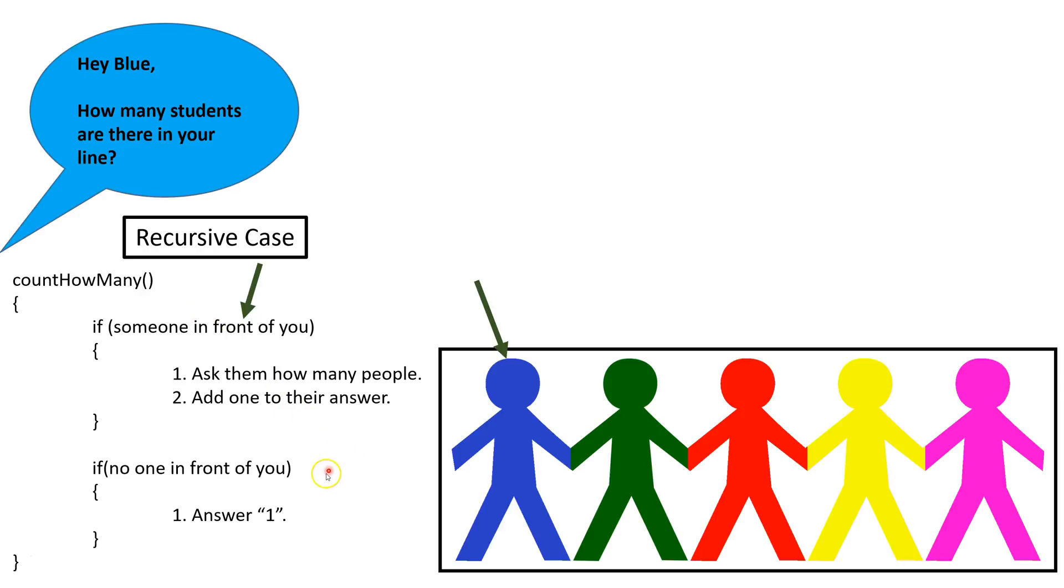On the other hand, if there is no one in front of you, you simply answer one because that is the number of people in your line, one which is yourself. We call this the base case because it does not call the algorithm again.